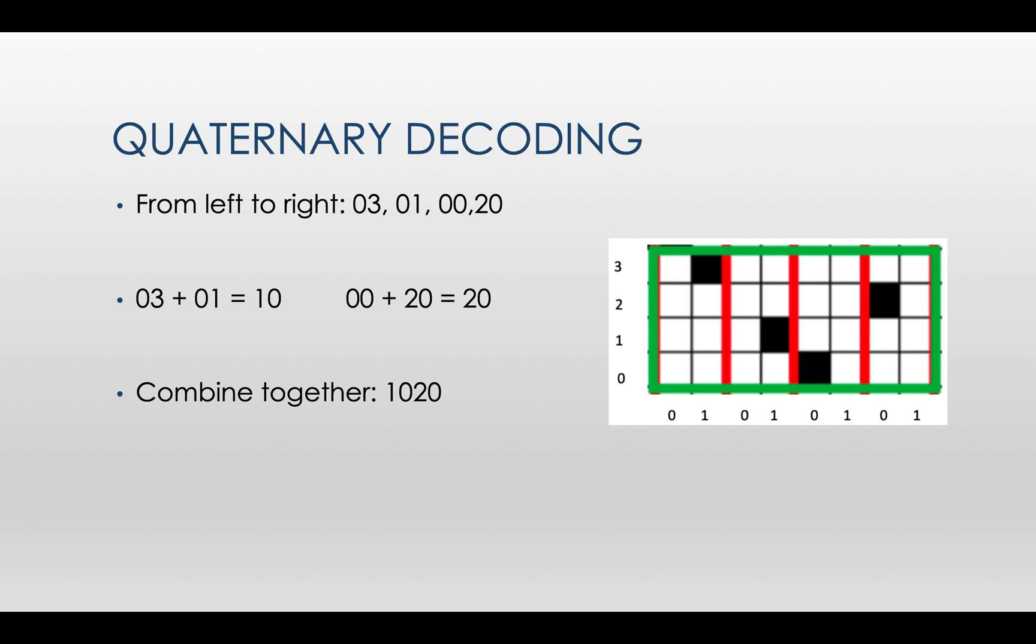The same way, we can read out the numbers from left to right. They are 0, 3, 0, 1, 0, 0, 2, 0.